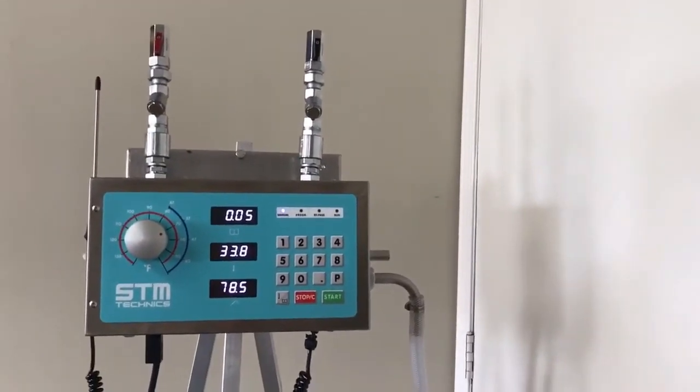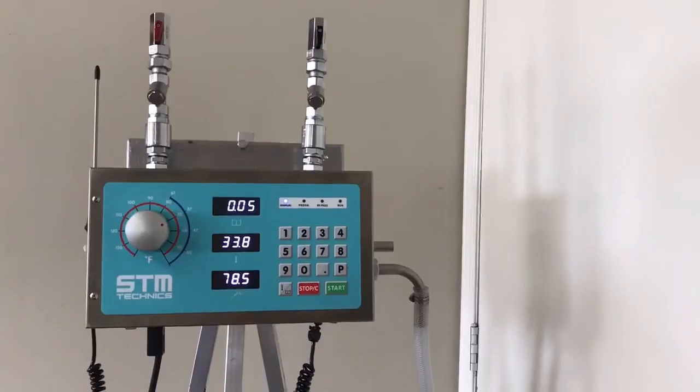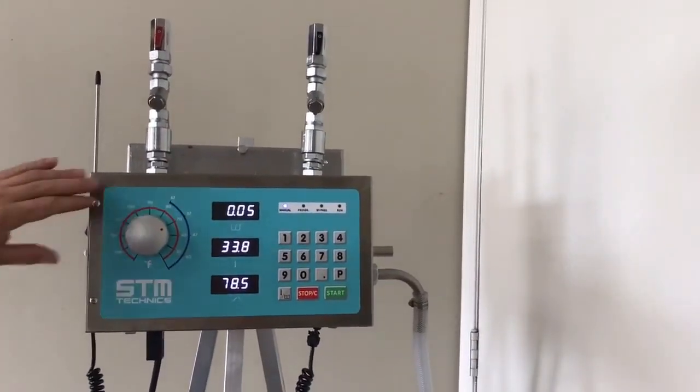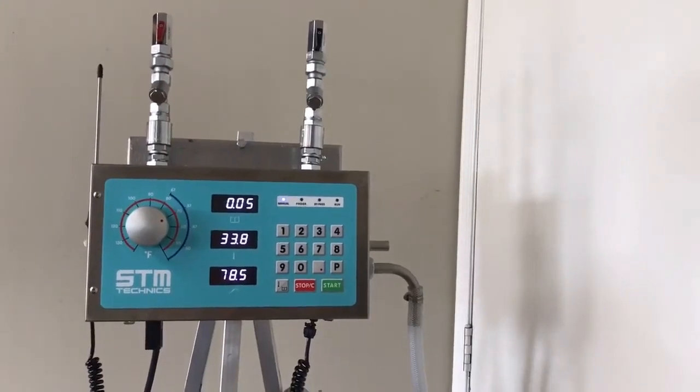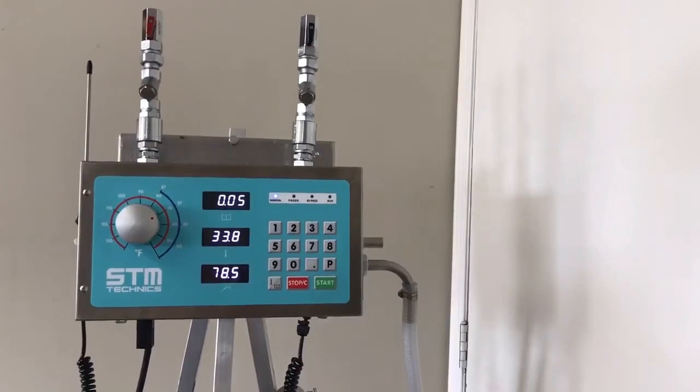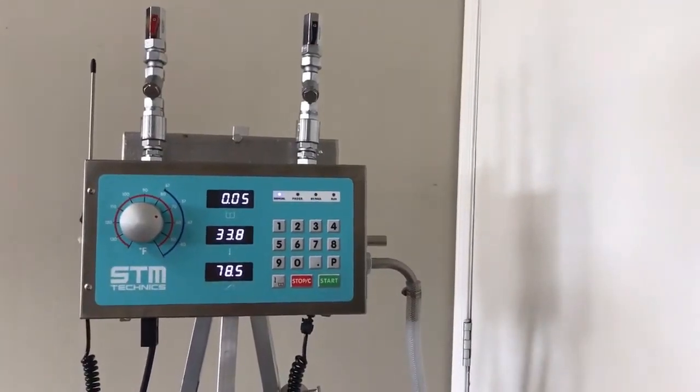Our training today is a two part training. First we're going to train on internal parameters and set up your machine for operation in your facility. After that we'll enter the second stage and that's how to use the machine on manual mode.